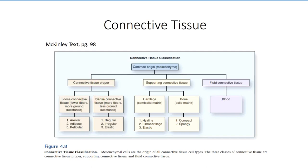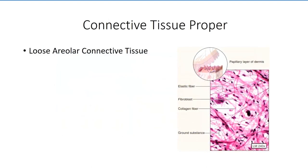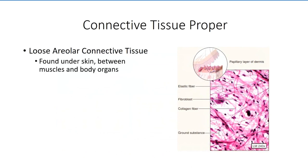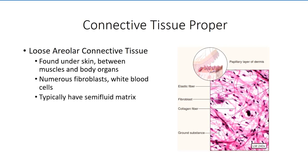Loose connective tissues are characterized by closely packed cells with minimal amounts of surrounding matrix, as the name implies. With dense connective tissue, there is an abundance of extracellular matrix with the cells spread much further apart. The fascia found deep to the skin and separating muscles from one another is referred to as loose areolar connective tissue. It is composed of loosely packed fibroblasts embedded in a semi-fluid matrix in which high concentrations of glycoproteins draw water molecules into the extracellular environment. Protein density is low, but all three major types of protein are present to give support to the matrix.